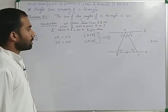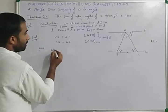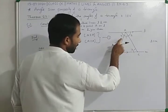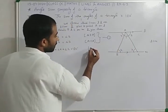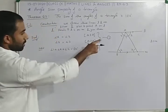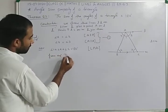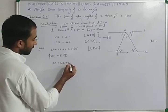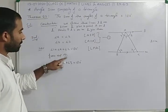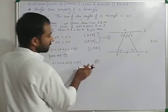Now we can write the sum of these angles. Angle 1 plus angle 4 plus angle 5 is equal to 180 degrees, because these three angles lie on the same line and form a linear pair or straight angle. From equation 1, we replace angle 4 with angle 2 and angle 5 with angle 3. So angle 1 plus angle 2 plus angle 3 is equal to 180 degrees. Hence proved.